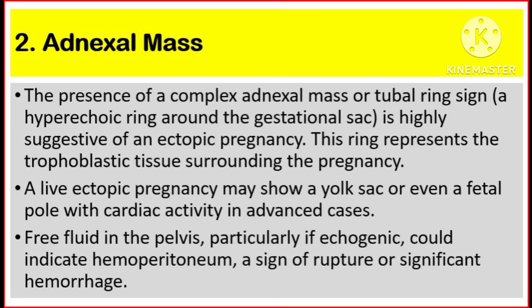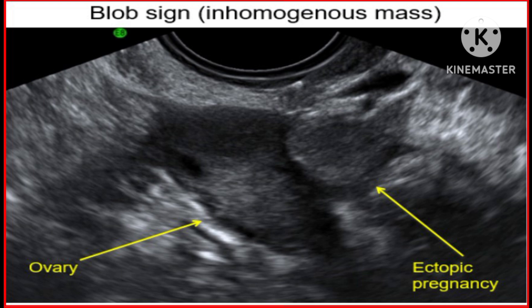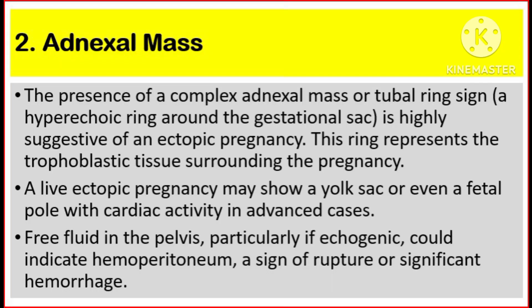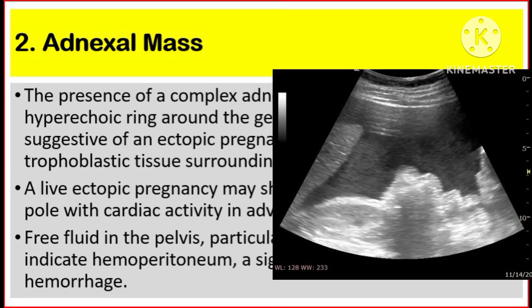Number two, adnexal mass. The presence of a complex adnexal mass or tubal ring sign — which is a hyperechoic ring around the gestational sac — is highly suggestive of an ectopic pregnancy. This ring represents the trophoblastic tissue surrounding the pregnancy. A live ectopic pregnancy may show a yolk sac or even a fetal pole with cardiac activity in advanced cases. Free fluid in the pelvis, particularly if echogenic, could indicate hemoperitoneum, which is a sign of rupture or significant hemorrhage.